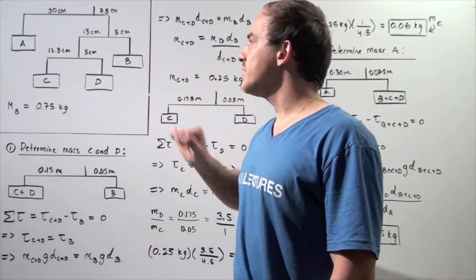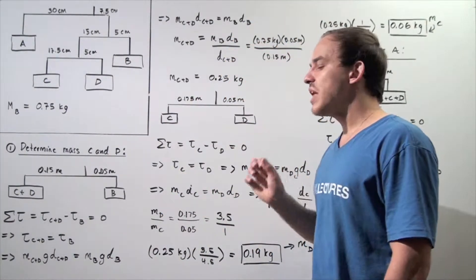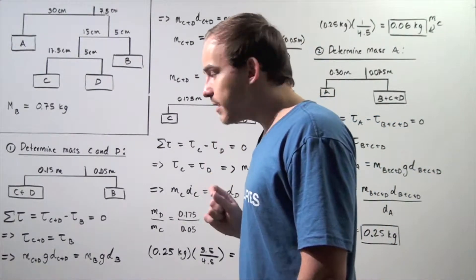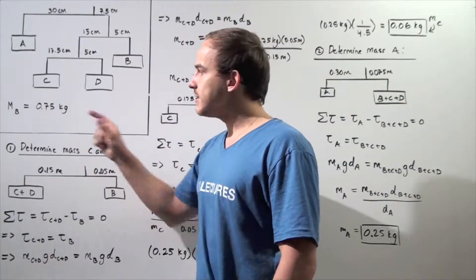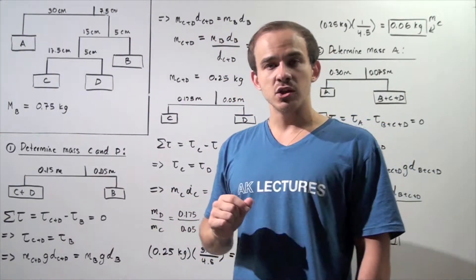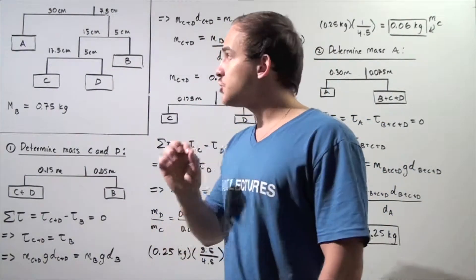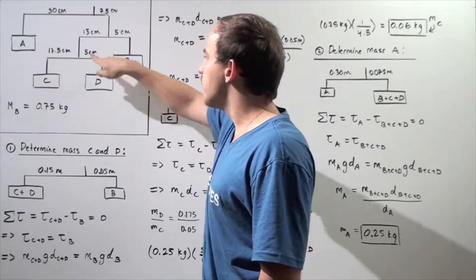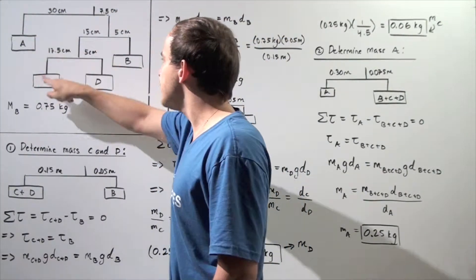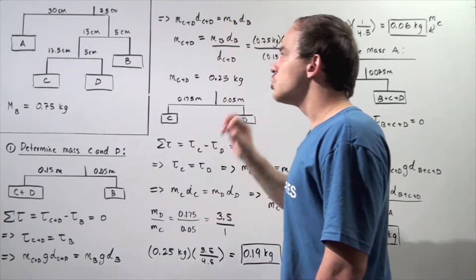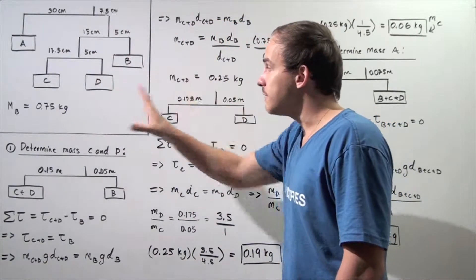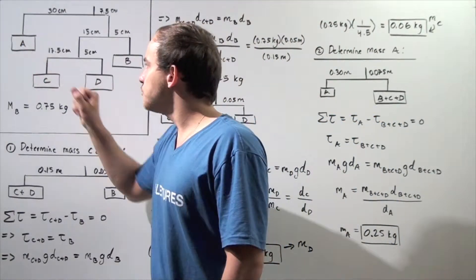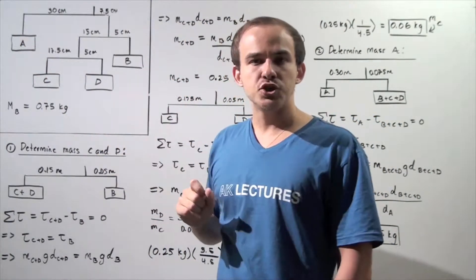We have a system of four objects in static equilibrium. The mass of object B is 0.75 kilograms, and we assume that beam one, beam two, beam three, and the cords are all massless. Knowing that and the given information, we want to calculate the mass of object A, object C, and object D.